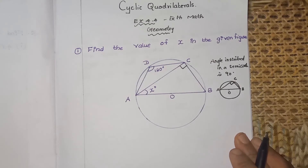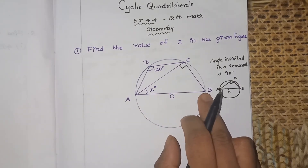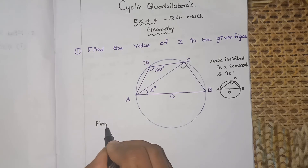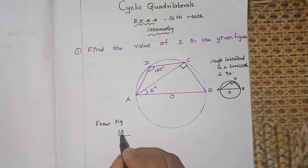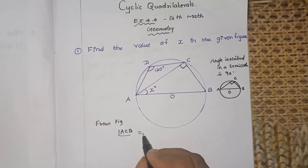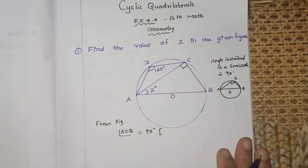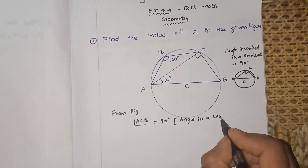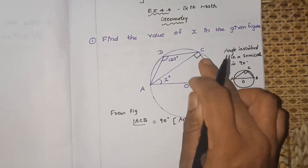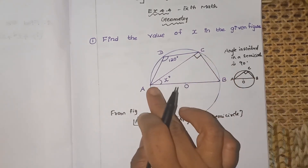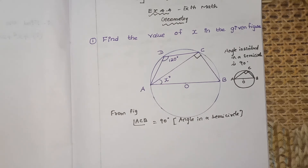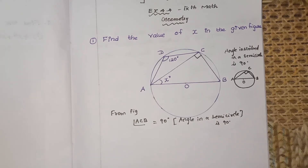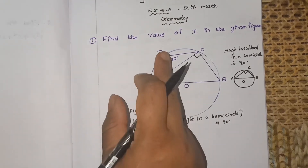So angle ACB equals 90 degrees. The reason: angle in a semicircle. We have found one angle of the triangle — it is 90 degrees, a right angle. Now we need to find x. From the figure, write: angle ACB = 90°, reason: angle in a semicircle is 90°.